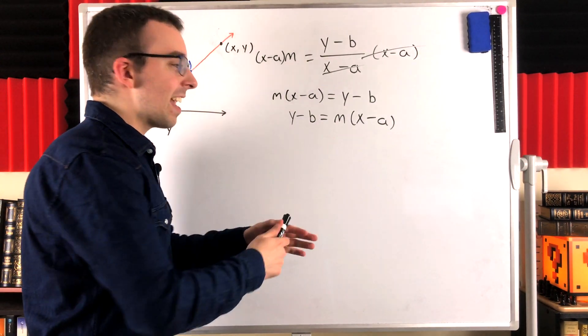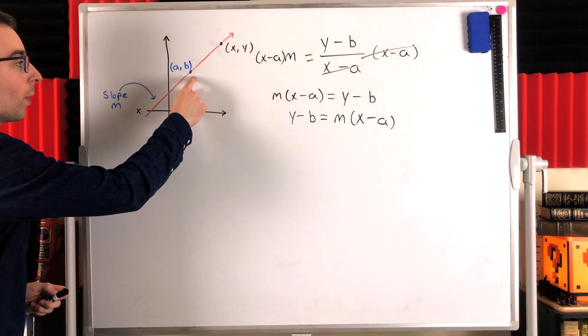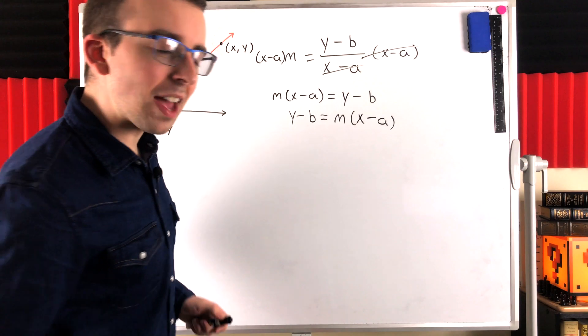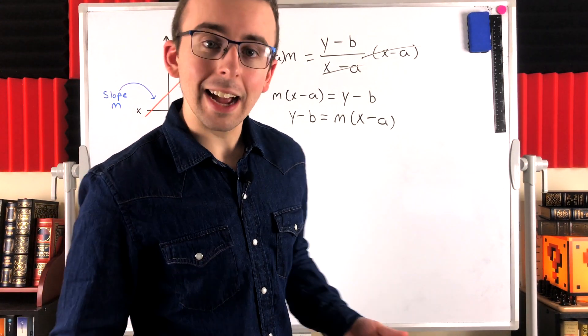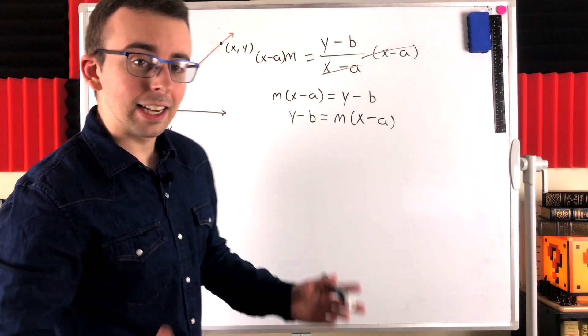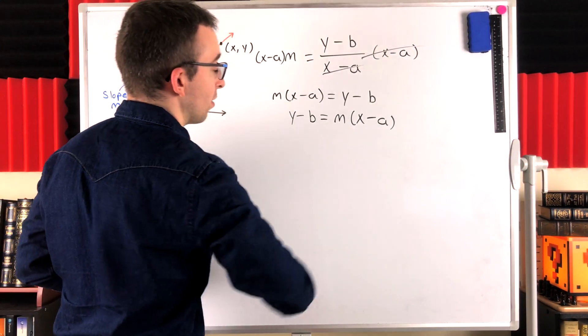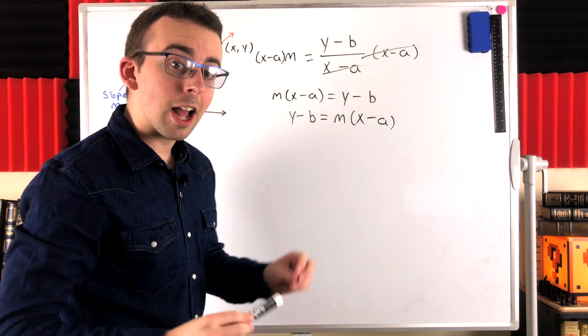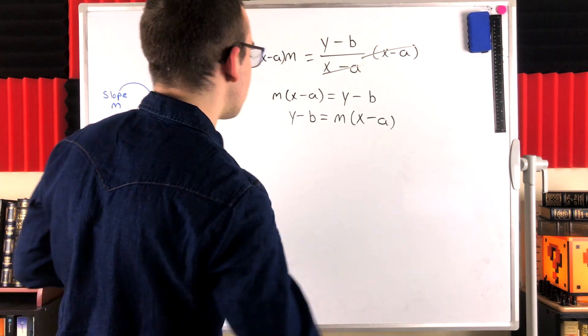So, this means if a line passes through a point AB and has a slope of M, then any other point X, Y on the line will satisfy this equation. And if any pair of coordinates X and Y satisfy this equation, the point they describe must be on the line. So, let's see an actual example just to drive the point home.